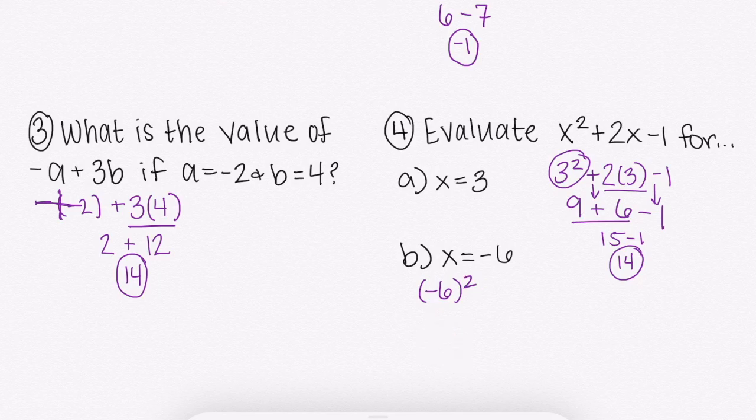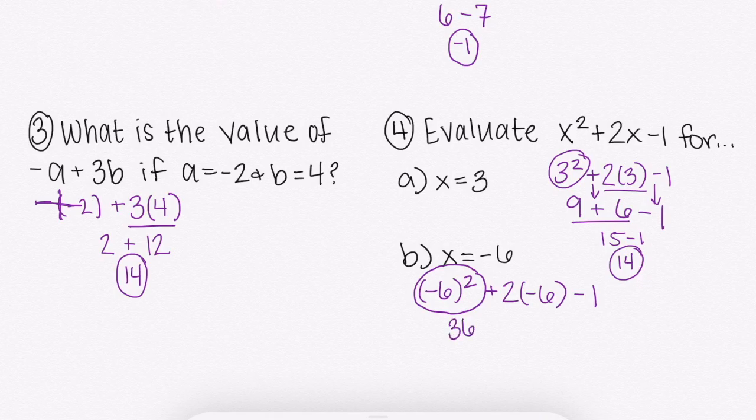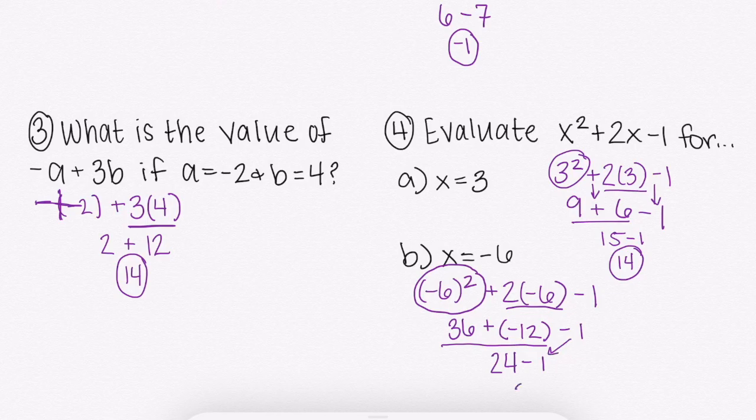We're going to continue plugging in. So plus 2 instead of x or instead of 3. Again, we're going to have negative 6 minus 1. And now we can go ahead and simplify it out like we did before, starting with our exponents. Remember, this is telling us negative 6 times itself. Negative 6 times negative 6 gets us a positive 36 plus 2 times negative 6 gets us negative 12 minus 1. All right, then left to right, 36 plus a negative 12 or 36 minus 12 would get us 24 minus 1. Just bringing that down would get us 23.